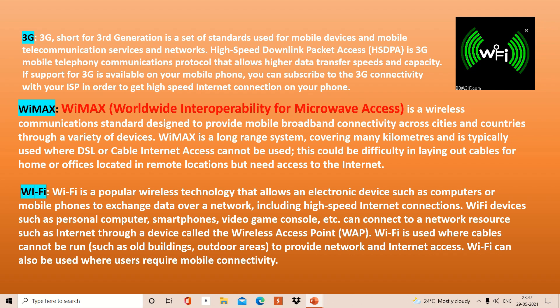Now we have WiMAX — Worldwide Interoperability for Microwave Access. This is again a wireless communication technology. It is used where you cannot use normal cables. Basically it is used for WAN — in metropolitan area networks where you need to provide internet facilities to distant places but running cable connections to those areas is very difficult. The concept of metropolitan area network is based on WiMAX.